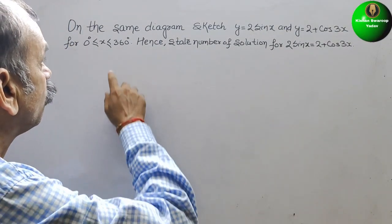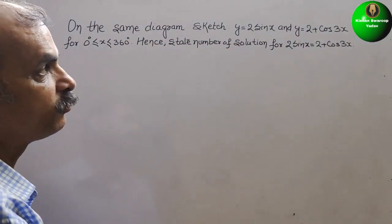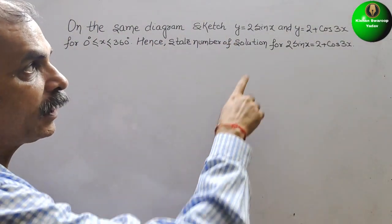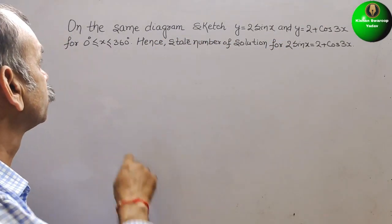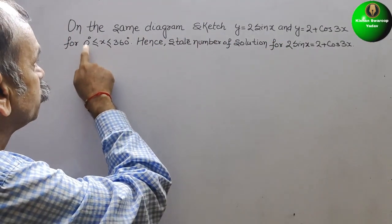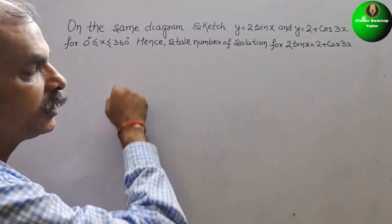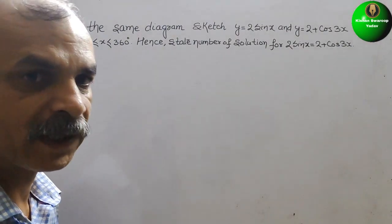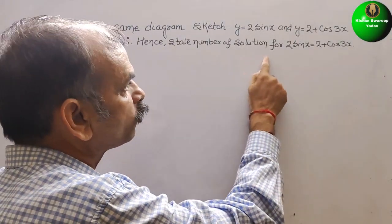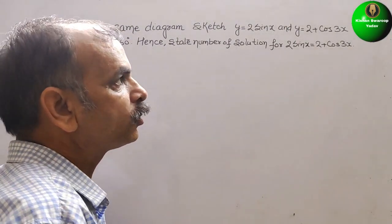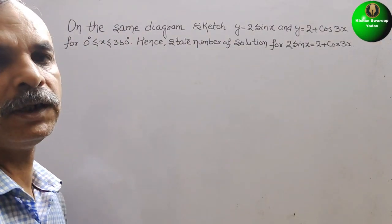The question asks us to sketch y = 2 sin x and y = 2 + cos 3x on the same diagram, for 0° ≤ x ≤ 360°. Hence, state the number of solutions for 2 sin x = 2 + cos 3x.